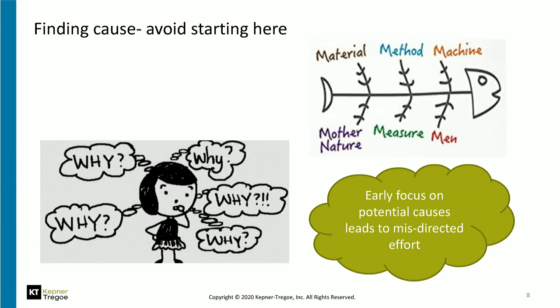If we ask people a 'why' question, they will often come up with a reason — but we don't know whether that's true until we have the data. If we ask them to draw a fishbone diagram, they will come up with suggestions that are not the real cause but are laden with assumptions. Focusing at the beginning on possible causes can lead to a lot of misdirected effort.